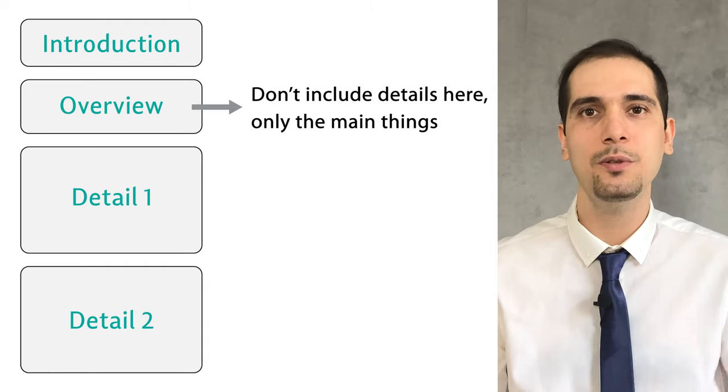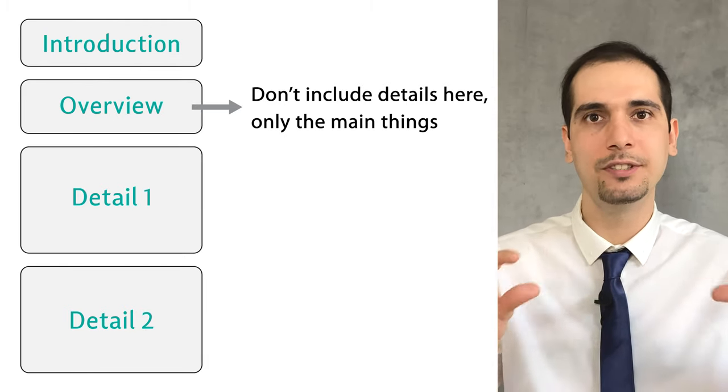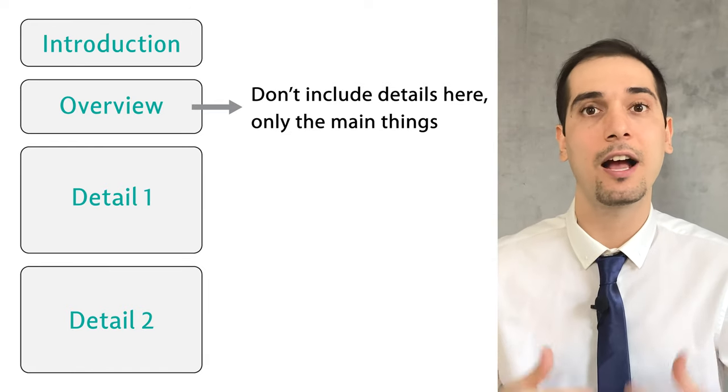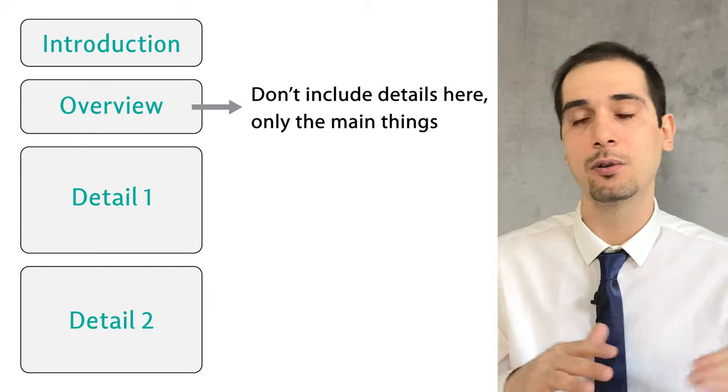Don't write too much in writing task one. Also, do not include any numbers or details in the overview paragraph — it's an overview, so talk about general things: generally the trend is upward or downward. Just include the main things, not the details, in the overview.